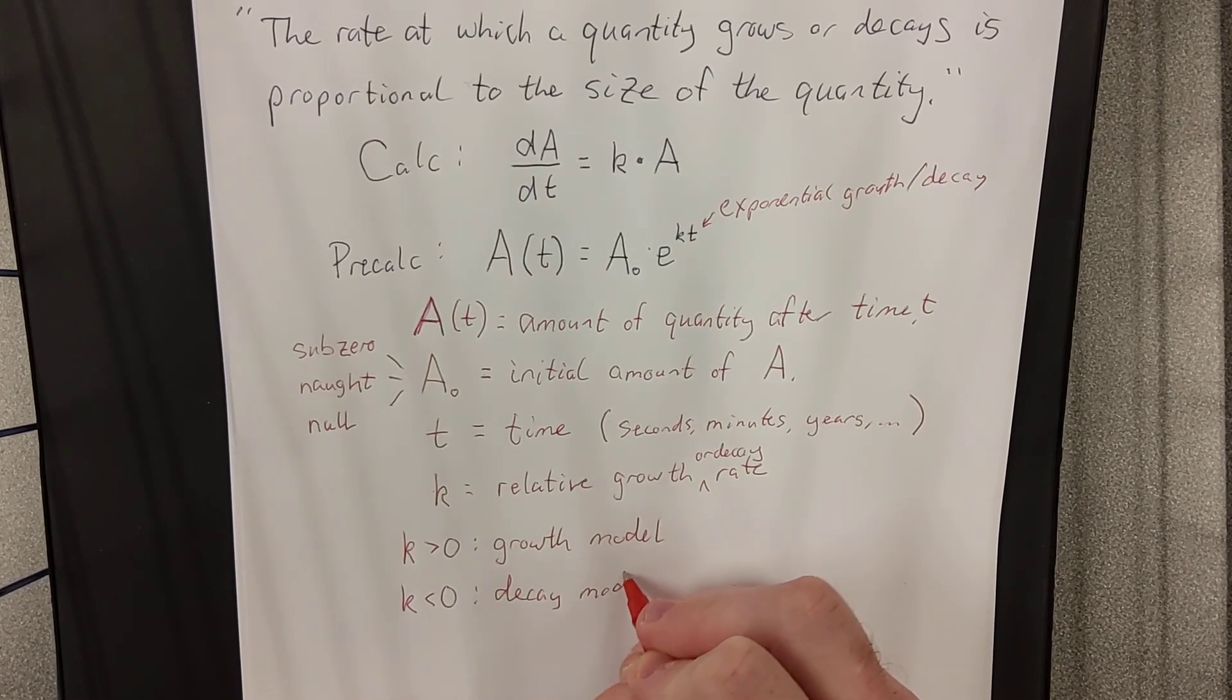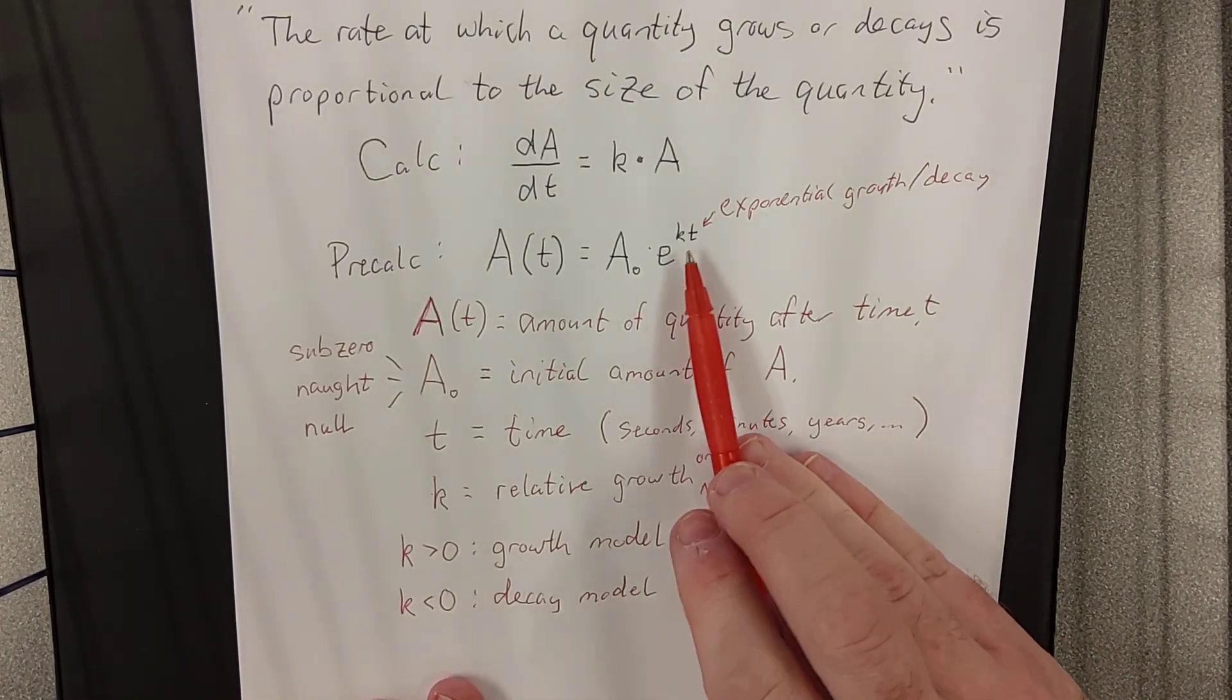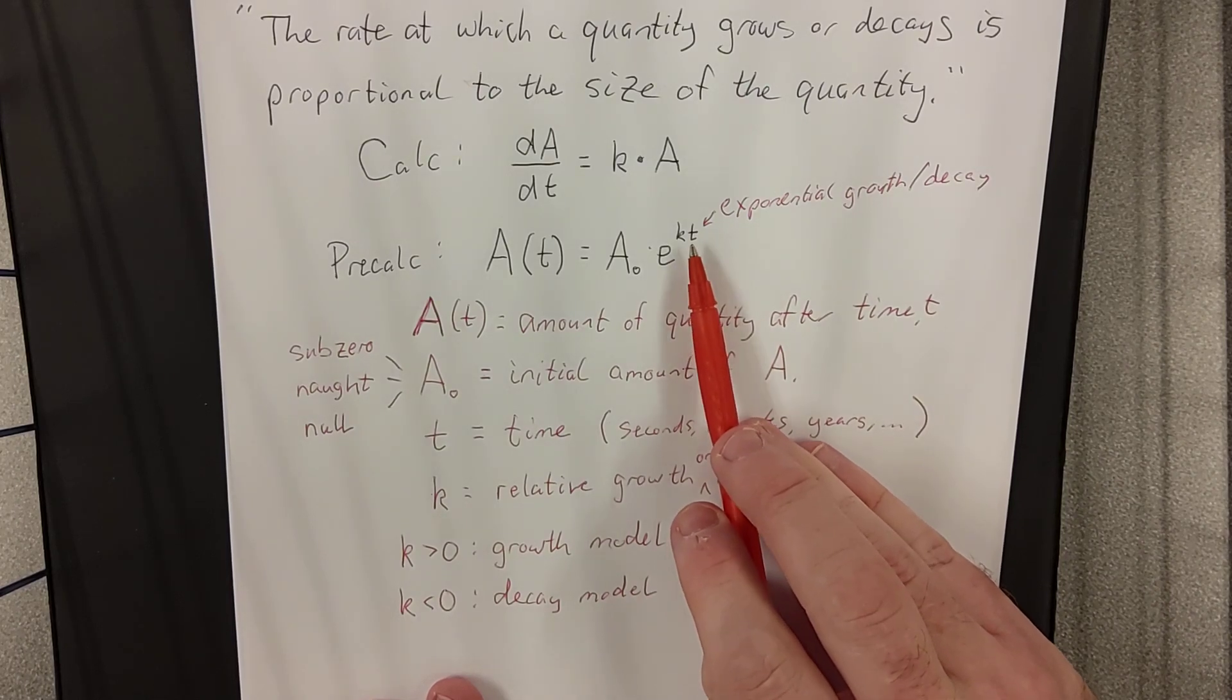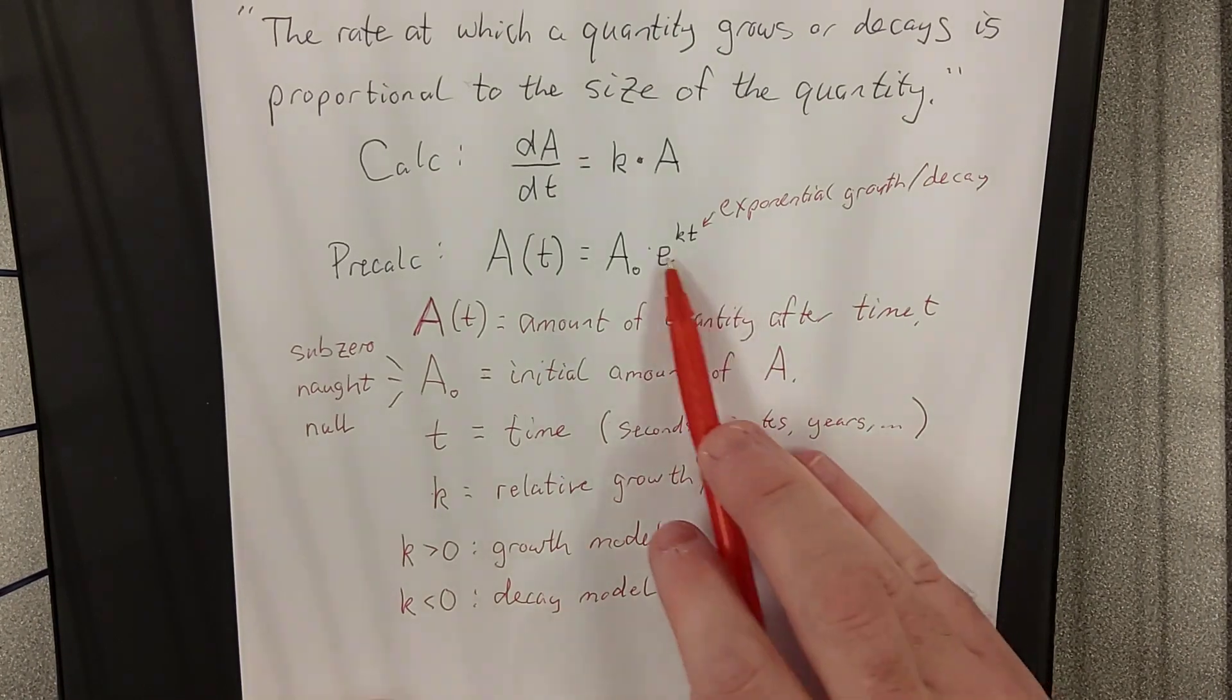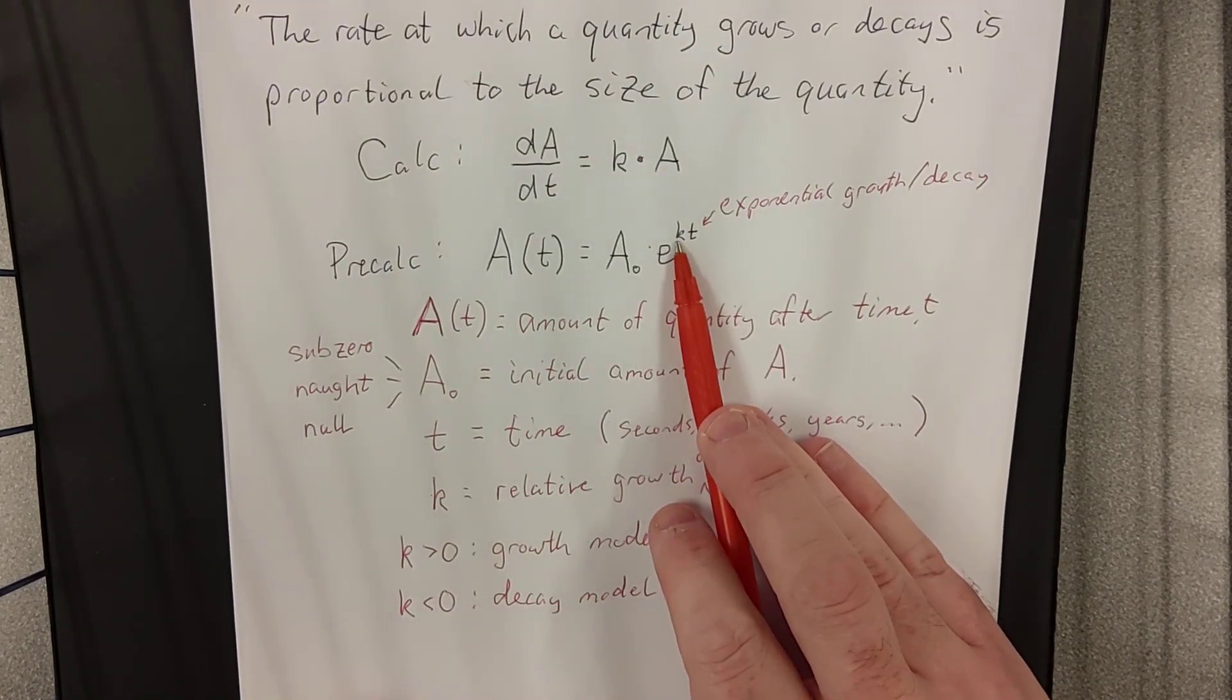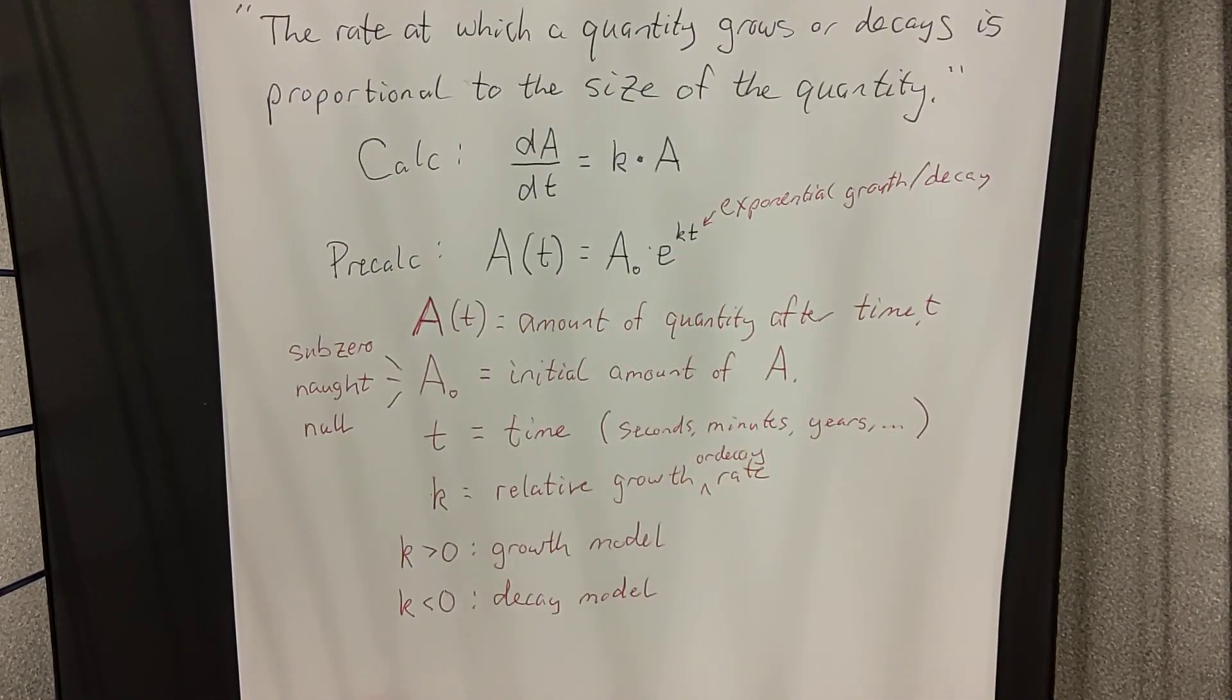The reason being, if we have a positive exponent on our exponential, that means that as T increases, the value of the exponential will be growing as well. Whereas, if we have a negative exponent, then as T increases, our exponent is now getting bigger in the negative direction. That means that the overall quantity would be getting smaller.